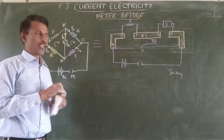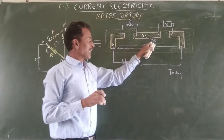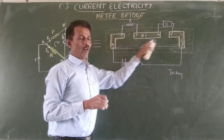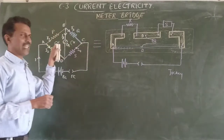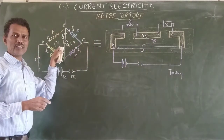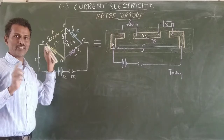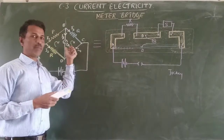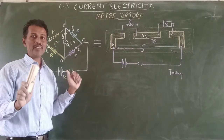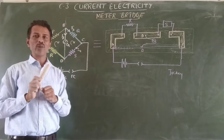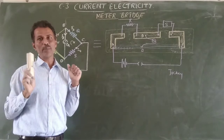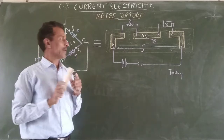So when the galvanometer reads zero, this is exactly the balanced Wheatstone bridge. Hence the meter bridge works on the principle of the balanced Wheatstone network, or Wheatstone bridge — that principle will work.